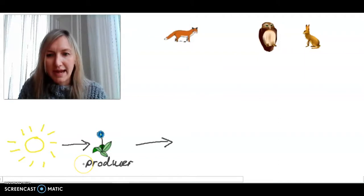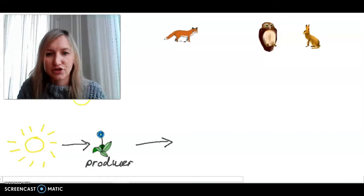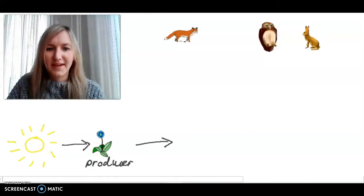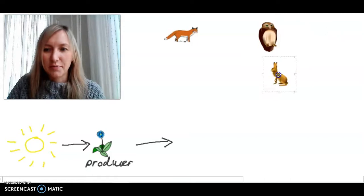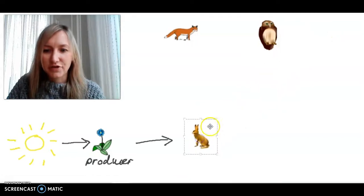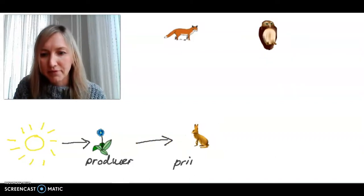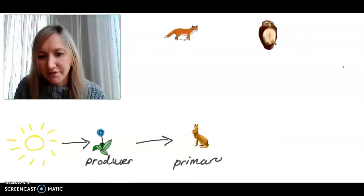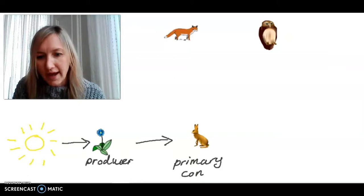So what's going to come next? What from the options we've got across the top here do we think is going to eat the producer and have the energy transferred to it? That's right. It's going to be the rabbit. So we'll move the rabbit down to the end of the energy transferred from this arrow. And then let's label that as our primary consumer, remembering that primary means first. So it's the first consumption by an animal of the energy produced by the producer.